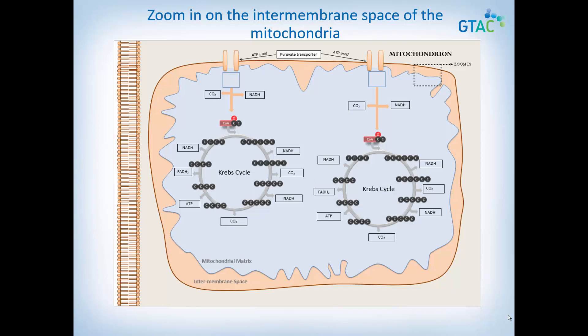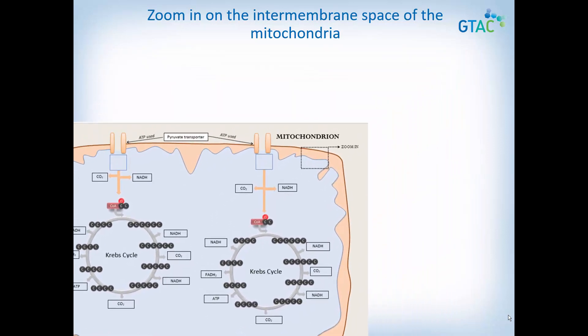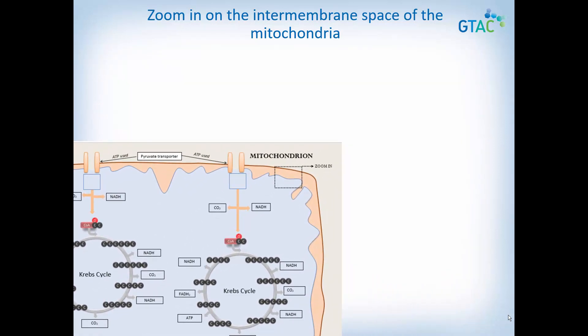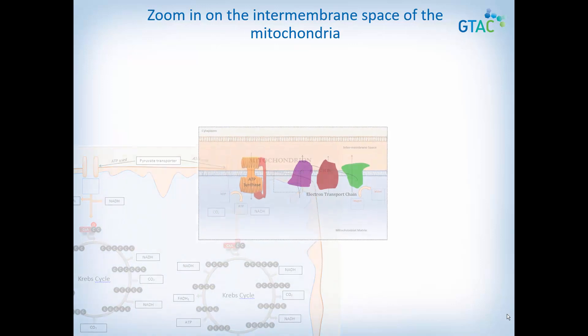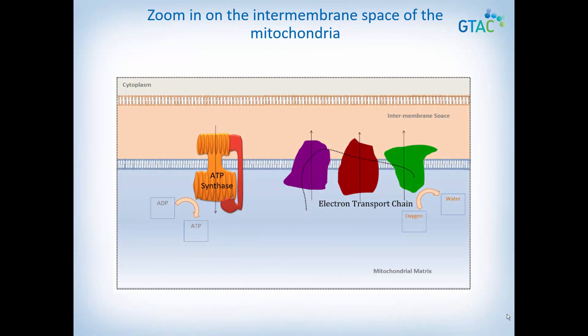It's time to prepare to model the final step in aerobic respiration: the electron transport chain. We need to zoom into the mitochondria so we can view more detail of the intermembrane space. Respiration poster C is focusing in on the intermembrane space where the electron transport chain is located.